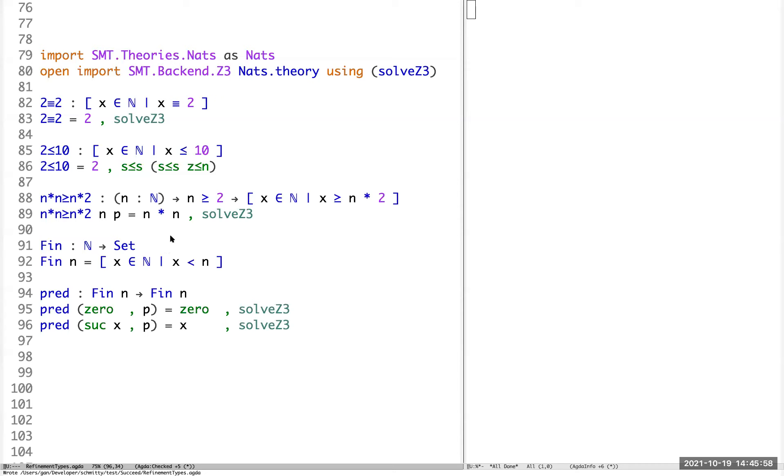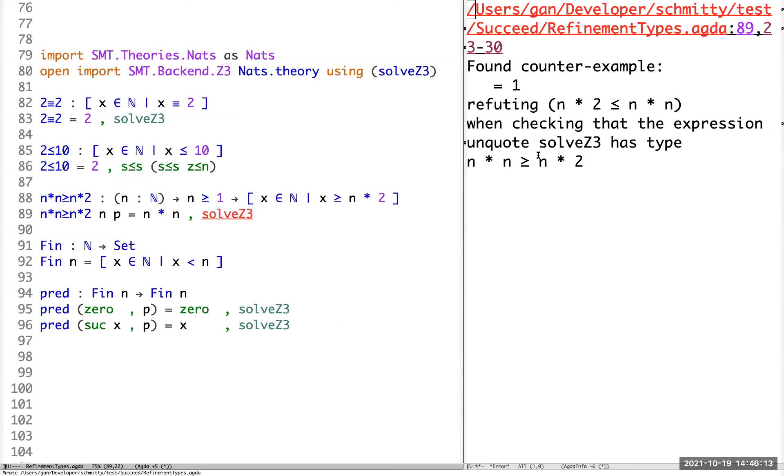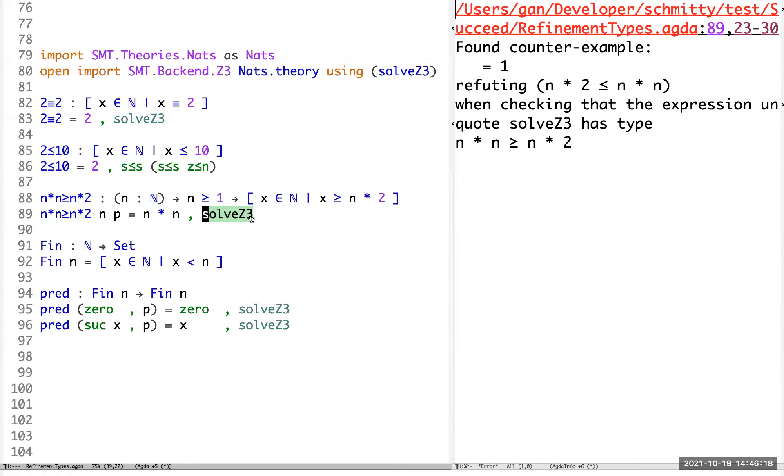So let's take a look at this program. Let's say we change from n greater or equal to 2 to just greater or equal to 1. And if we run this, you will see here Schmiddy actually found a counterexample that if n is equal to 1, this doesn't hold. So that's how you would use Schmiddy to automate proofs.